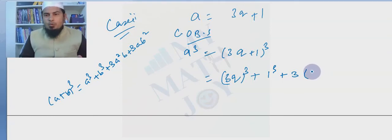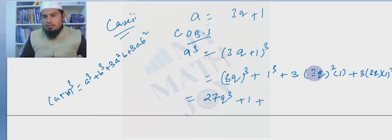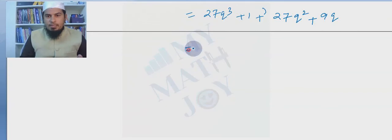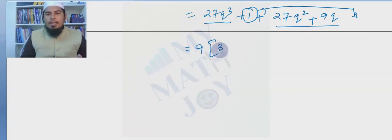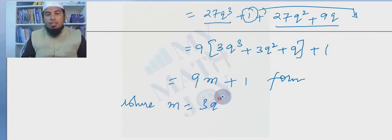From 27q³+27q²+9q+1, taking 9 common from the first three terms: a³ = 9(3q³+3q²+q) + 1 = 9m+1, where m = 3q³+3q²+q, a positive integer. This is the 9m+1 form.